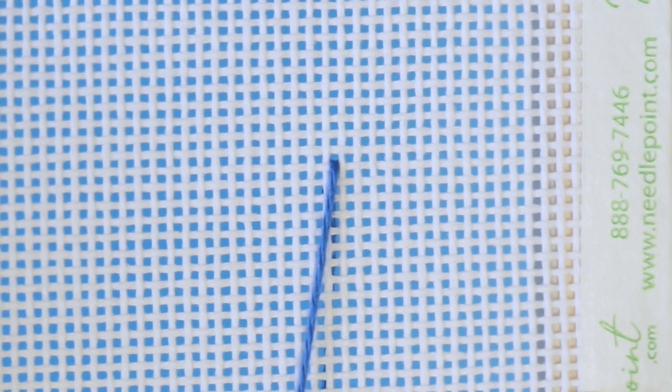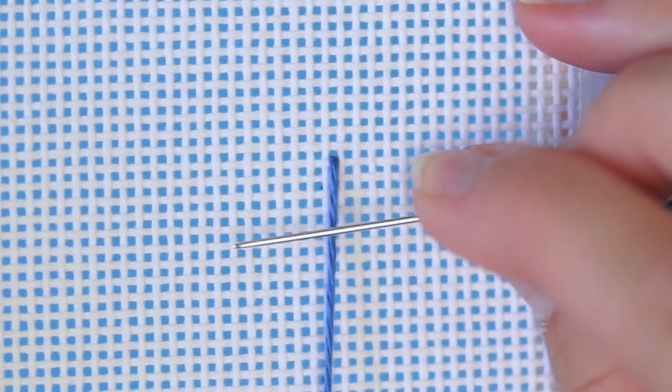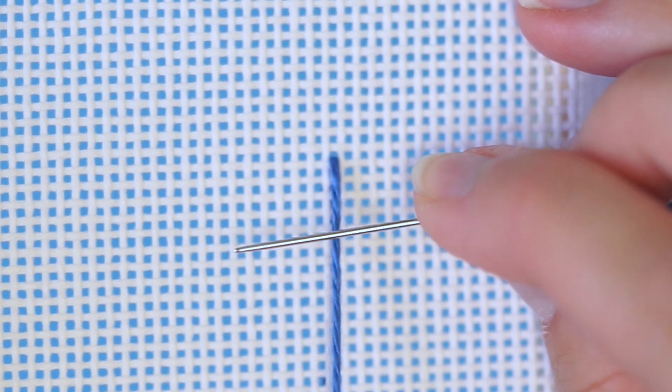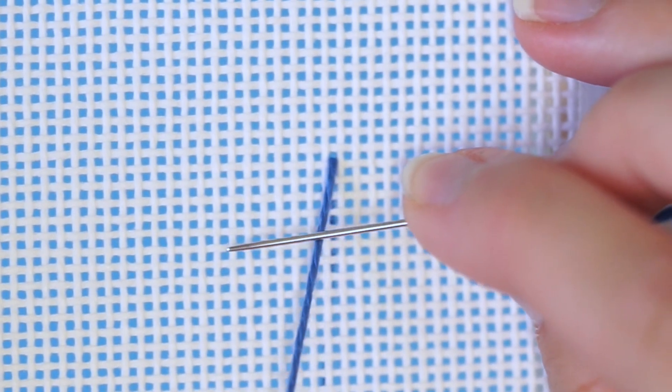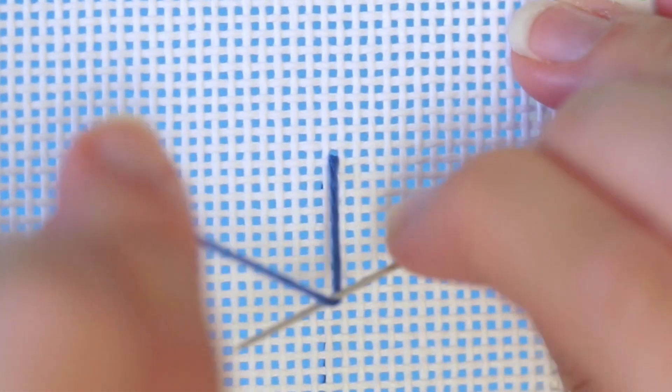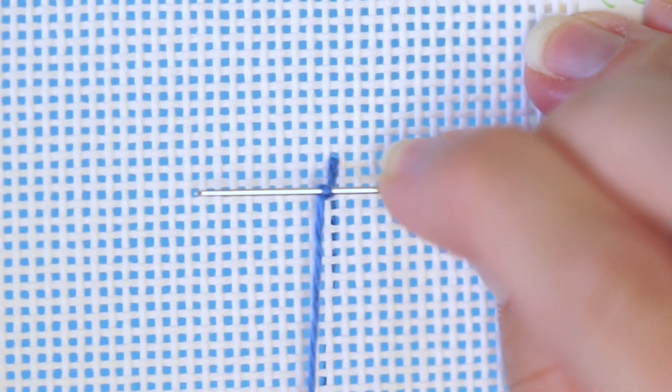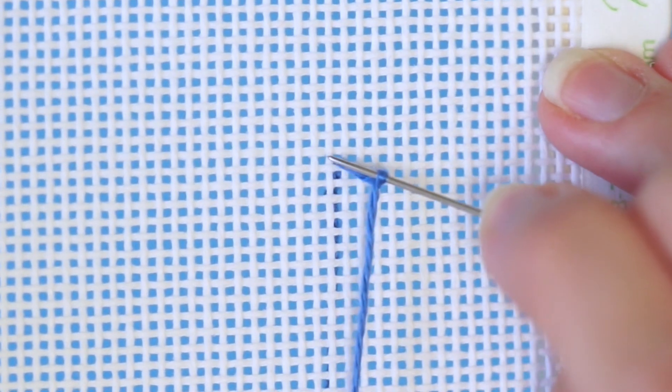Begin by coming up in the canvas where you want your French knot to lie. Hold the needle in your dominant hand and keep the thread taut in your non-dominant hand. Place the needle on top of the thread and wrap the thread once around the needle.